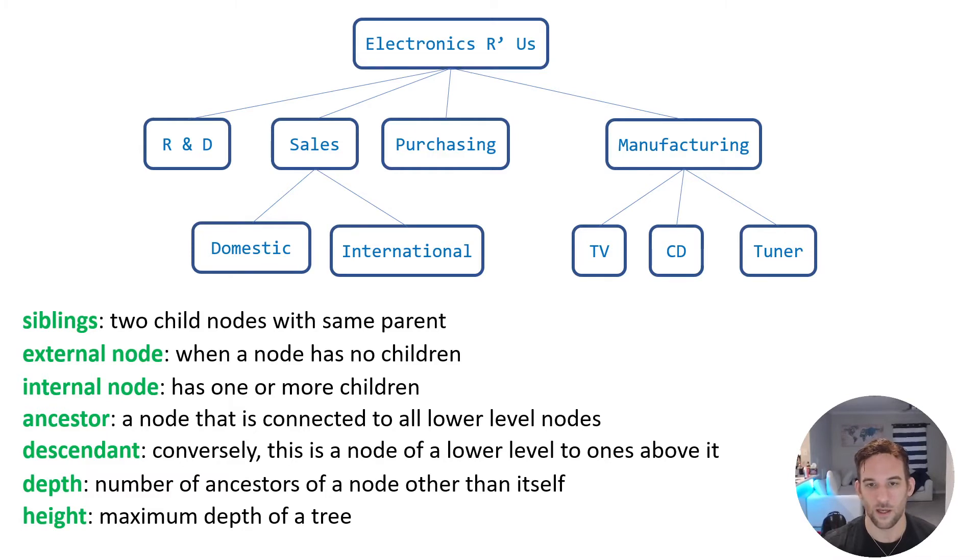So the depth is the number of ancestors of a node other than itself. So it has two ancestors, sales and Electronics R Us. So the depth is two. Fairly straightforward, but if you were to label, these are all levels. So Electronics R Us is on the zeroth level, manufacturing, purchasing, sales, R and D is on the first level and so forth. The depth lines up here. So we could say domestic, international, TV, CD, and tuner all have a depth of two. Now if we look at purchasing, this just has a depth of one because it only has one ancestor.